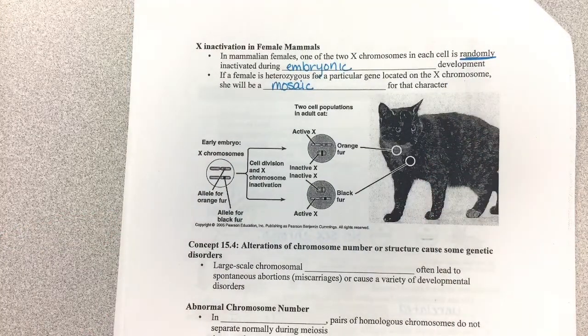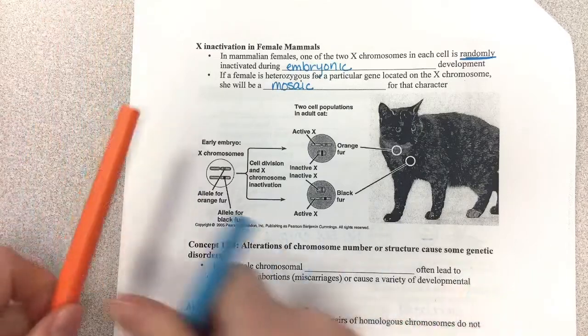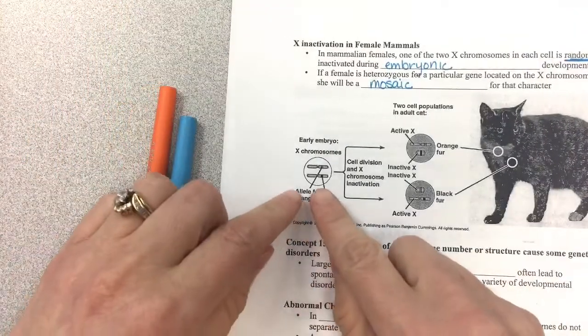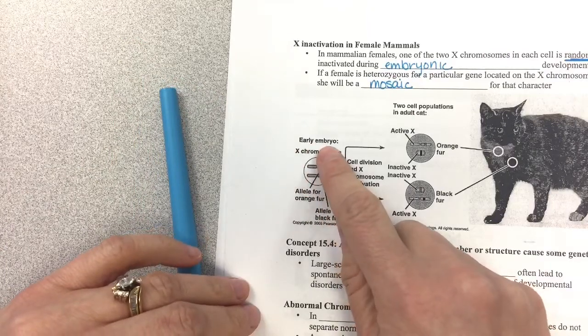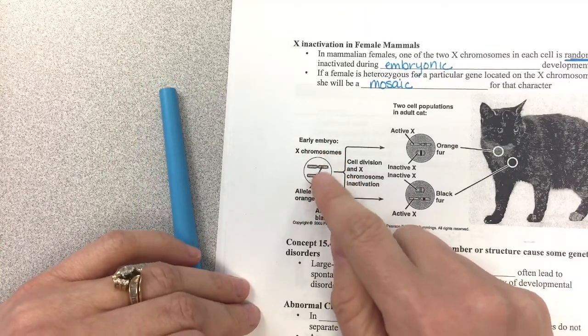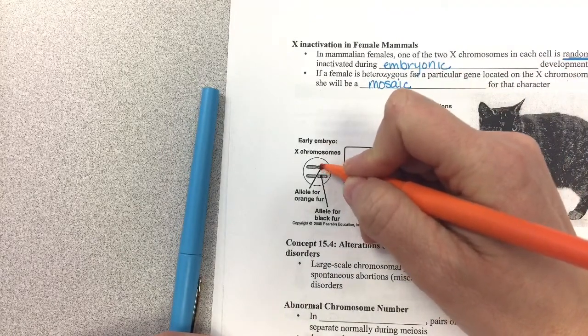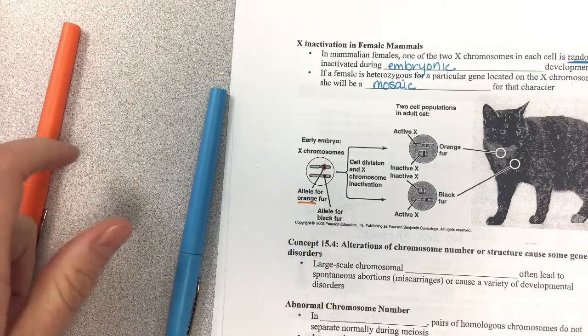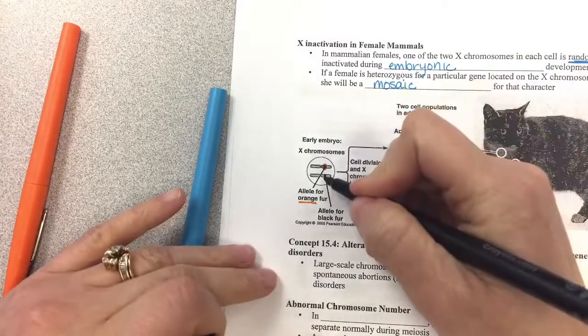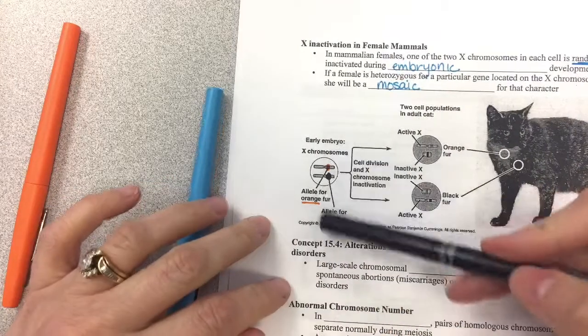So let's look at the heterozygous cat. So here are her - this is the early embryo. They're only showing you the sex chromosomes, so she has an allele for orange fur and an allele right here for black fur. So she's heterozygous.